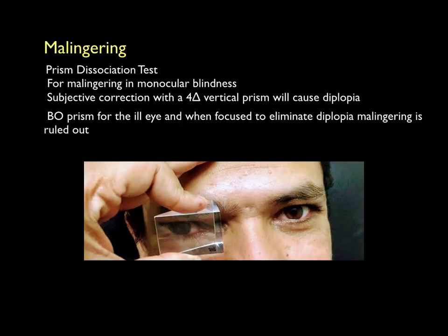A prism dissociation test using horizontal or vertical prism can be done to reveal malingering. A 4 prism diopter base-up or base-down prism is placed in front of one eye, sufficient to present diplopia. A normal person will complain of diplopia, whereas a malingerer will deny diplopia in the absence of any binocular vision problem.